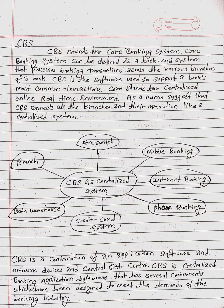CBS stands for Core Banking System. It can be defined as a backend system that processes banking transactions across the various branches of a bank. CBS is the software used to support a bank's most common transactions. CORE stands for Centralized Online Real-Time Environment. The name suggests that CBS connects all the branches and their operations like a centralized system.